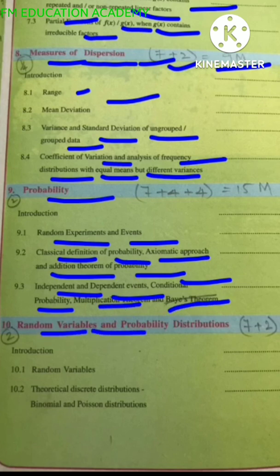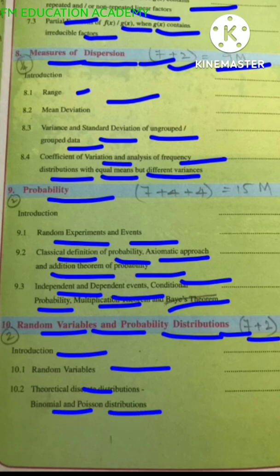Chapter 10, random variables and probability distributions. 7 mark plus 2 mark, that is, 9 mark questions. Introduction, random variables, theoretical discrete distributions, binomial and Poisson distribution.